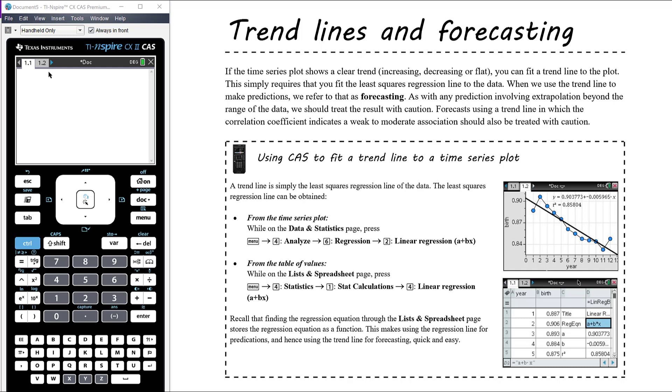Some instructions with your CAS, using CAS to fit a trend line to the time series plot, it's just fitting a regression line. So we know we can fit that regression line on the scatter plot in the data and statistics page, or we can do it from the table of values in the lists and spreadsheets page. So the instructions there for both, which we should be quite familiar with by now.